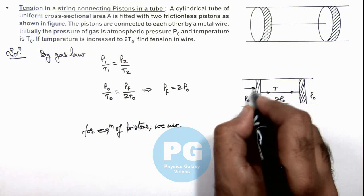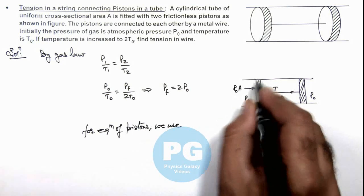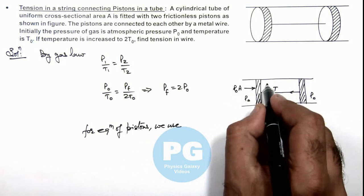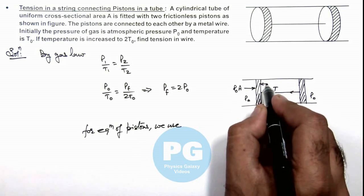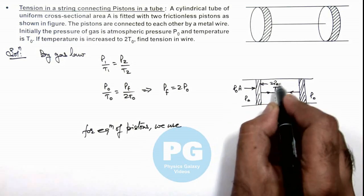from the left side pressure acting on it is P₀A, if A is the area of piston. From the right side toward left it'll be 2P₀A and tension is T.